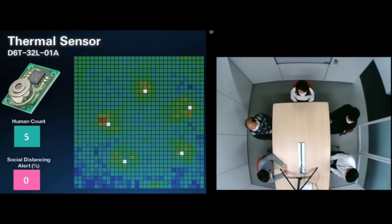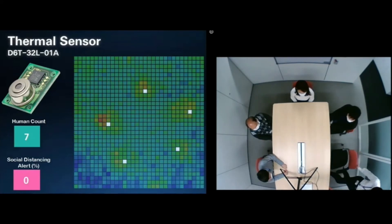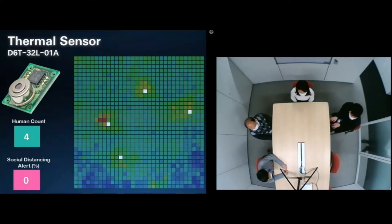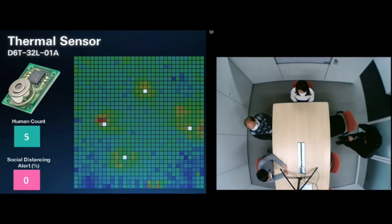OMRON engineers have worked hard on incorporating smarter algorithms in the sensor software, including ways to track and distinguish heat signatures from human beings. As you can see in this demonstration video, the sensor can distinguish individuals and even count the number of people, differentiating them from the heat signatures being emitted from the devices on the table.